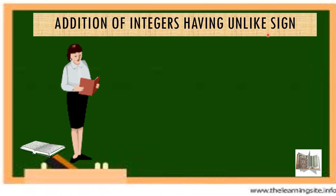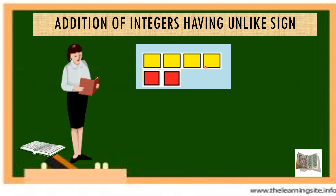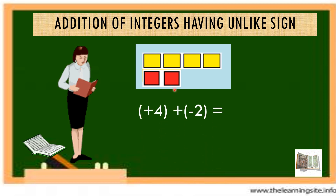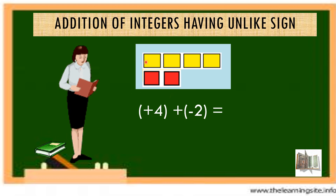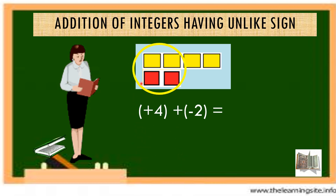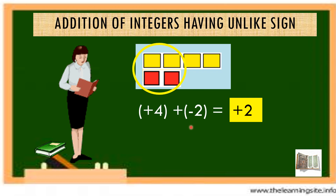For addition of integers having unlike signs: positive 4 plus negative 2 — if we add 2 and subtract 2, the result is 0. So positive 4 plus negative 2 gives a result of positive 2.